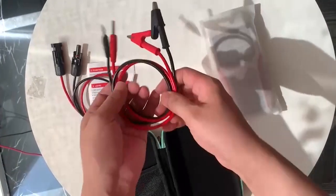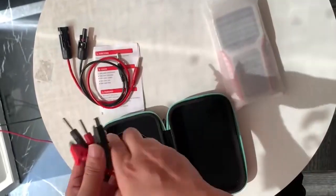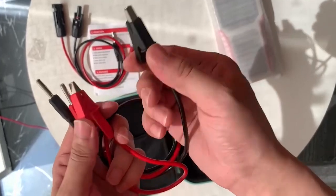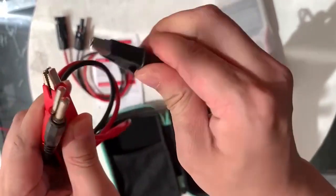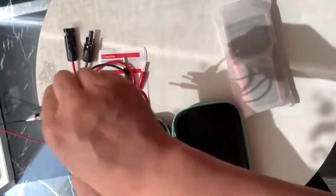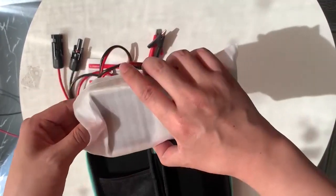Some solar panels don't have an MC4 connector. They only have bare wire, so you just use this alligator connector to clip the bare wire, then connect it to the tester. It's very easy.